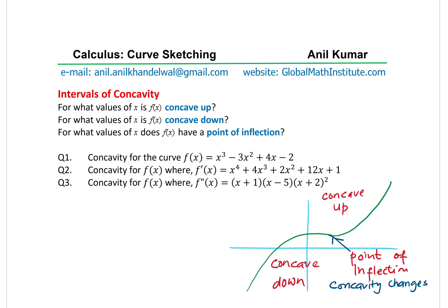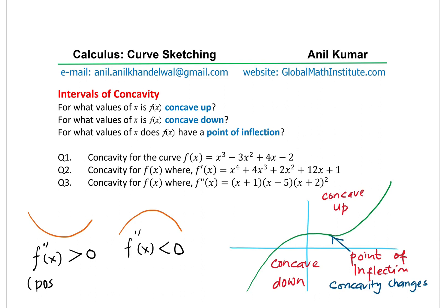Whenever you have a function which is concave up, the second derivative f''(x) will always be positive. If you have a portion of the graph which is concave down, the second derivative will be negative. That is how you test whether a part of the curve is concave up or down. For any given function we have to find the second derivative to decide about the concavity.